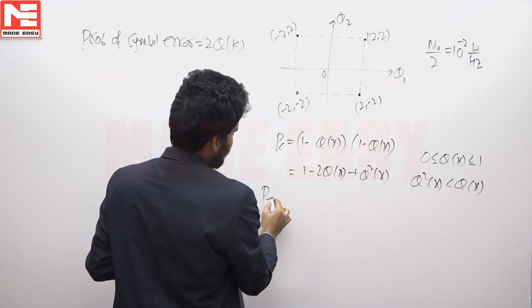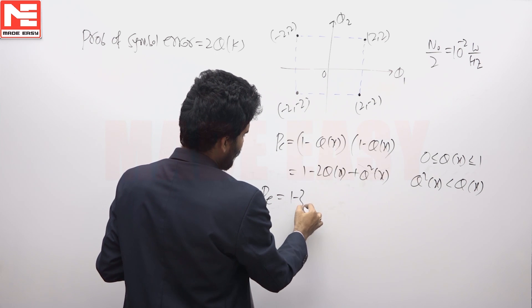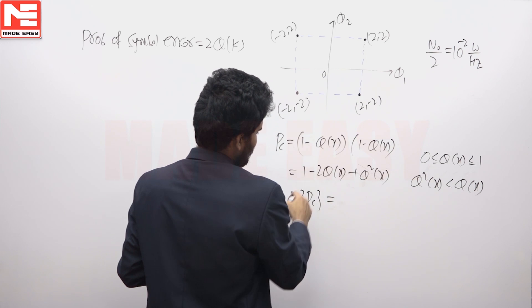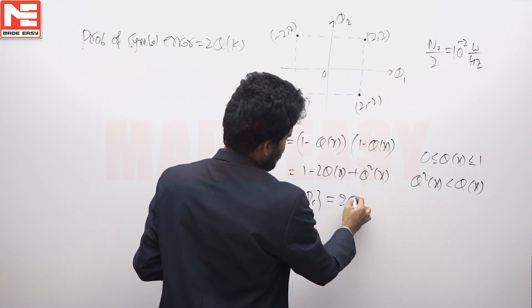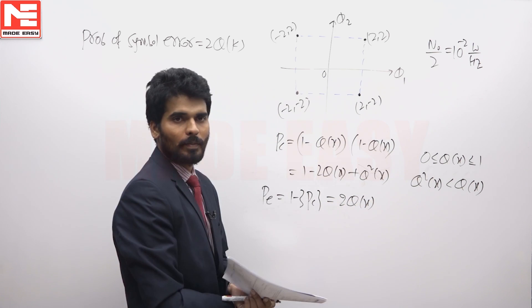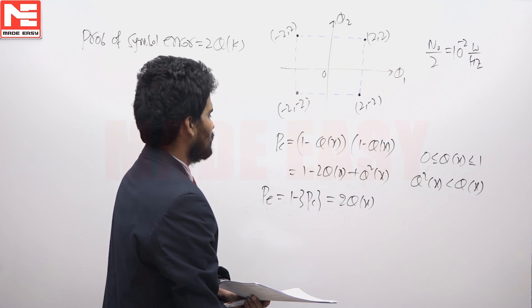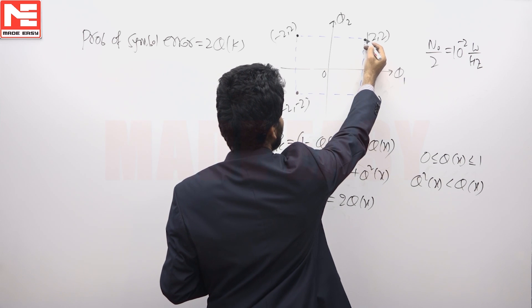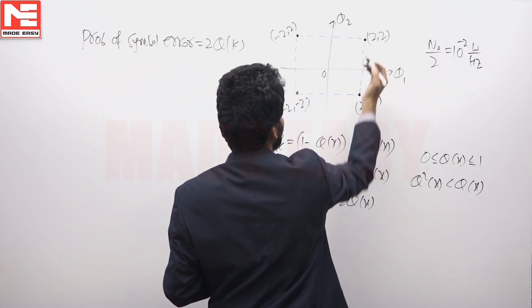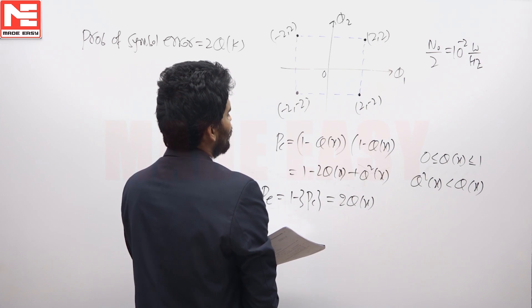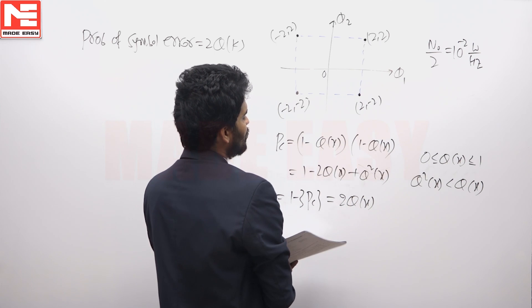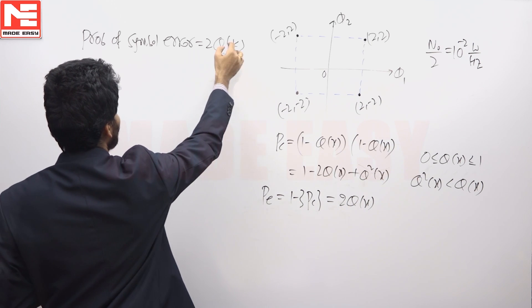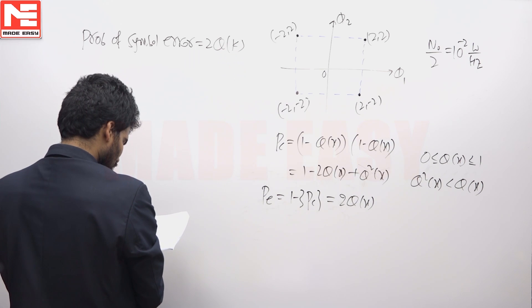Then the probability of error is 1 minus the probability of correct detection, which gives 2Q(x). So the probability of symbol error can be approximated as 2Q(x). This matches the given expression: the probability of symbol error is 2Q(k).